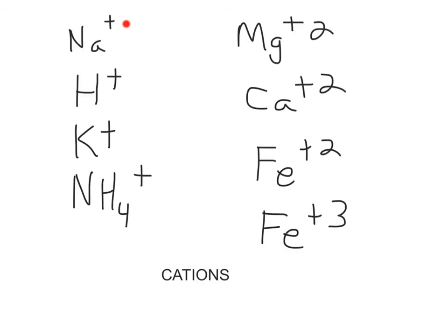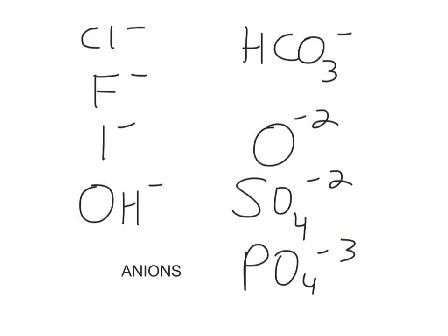In addition to sodium ions, some of the other common cations in the body include hydrogen ions, potassium ions, ammonium ions, magnesium, calcium, and two types of iron ions. In addition to chloride ions, some of the other common anions in the body include fluoride ions, iodide ions, hydroxide ions, bicarbonates, oxide, sulfates, and phosphate ions. We'll learn a lot more about the specific roles that these ions play in the body throughout the course.